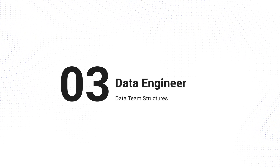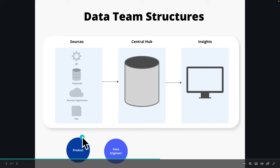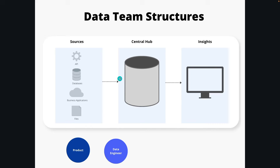Next is the data engineer, which is where most of us are operating. That is the pipelining and back-end work of getting the sources into some sort of central hub — creating those integrations, the data transformations, scheduling, all that stuff to get it moving along into something the rest of the company can use. You're probably going to be working a lot with people on the product side, whether that's software engineers or product owners, to understand schemas and make sure logic is correct.